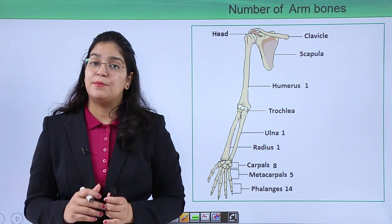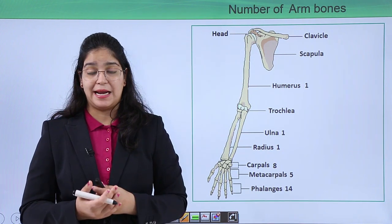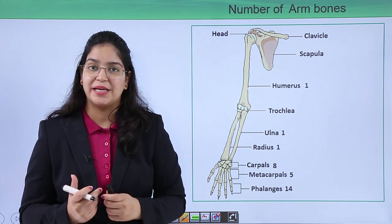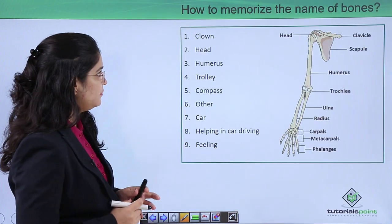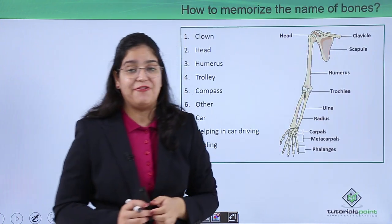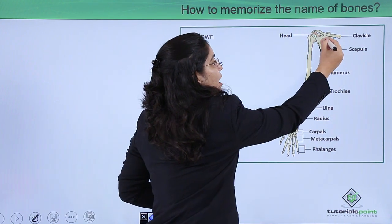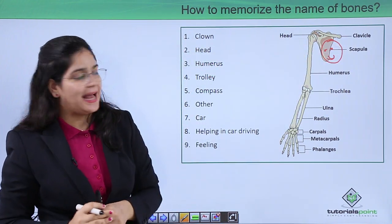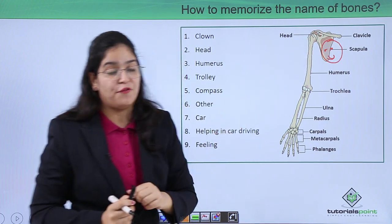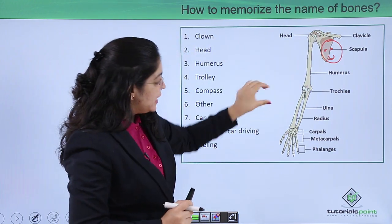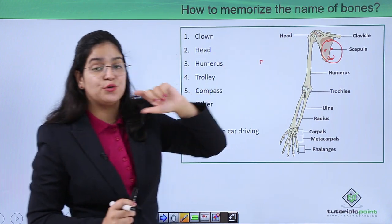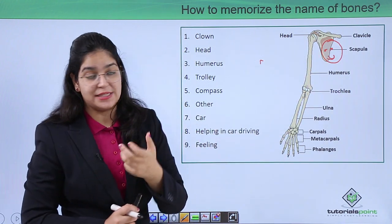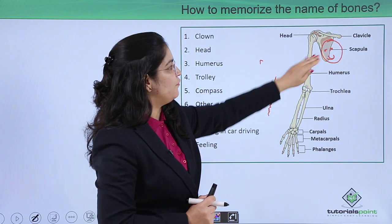We have learned about the names and number of bones in our arm, but the difficult part is to memorize their names. Let's try to make a story to learn these bones. The clavicle looks like the cap of a clown. As the arm starts from this point it is called the head. A clown is always humorous, so the bone directly connected to the clown is called the humerus.